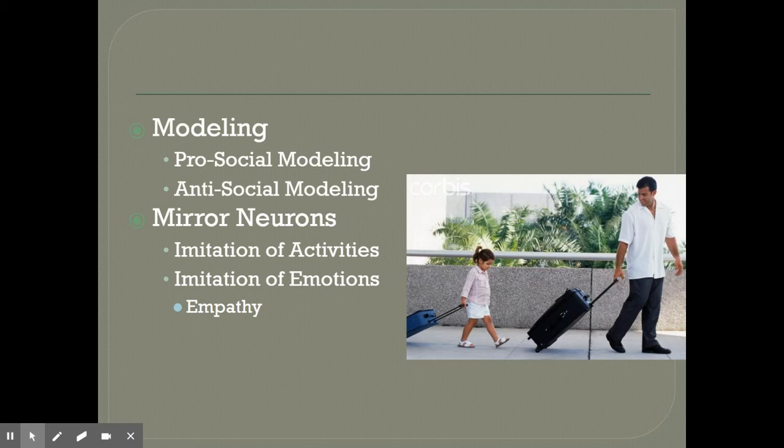One of the biggest examples of anti-social modeling is when we look at kids who have suffered abuse — especially physical or sexual abuse — in the home. When those kids grow up, they are much more likely to become abusers themselves, because they have learned that this is how to parent. Sometimes it may not go that far; they might just get into more fights at school because they see violence as the way to solve problems.